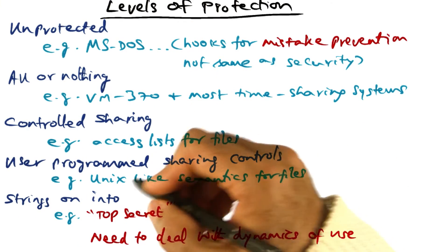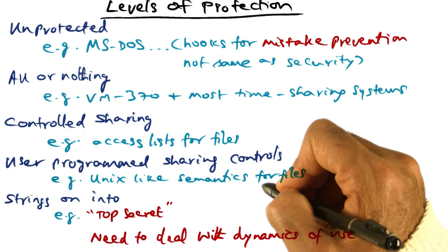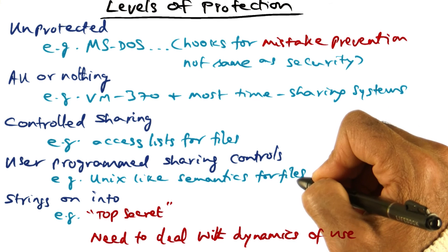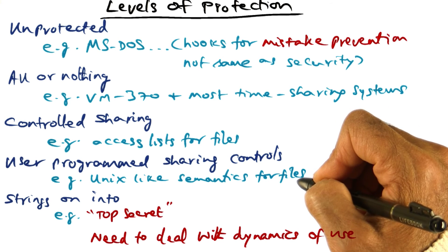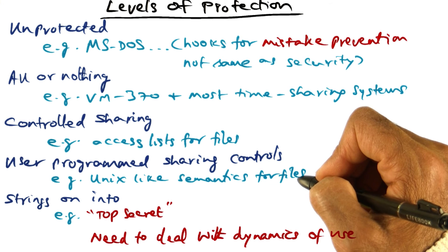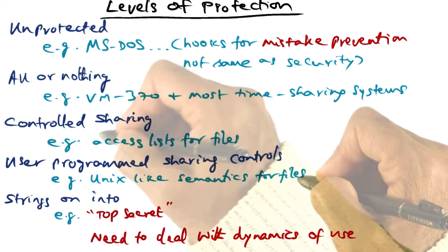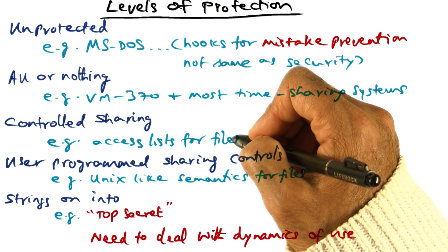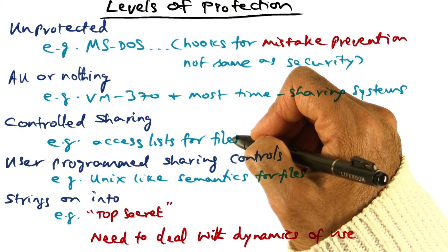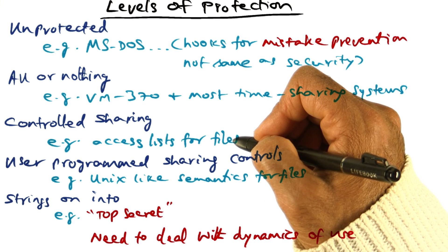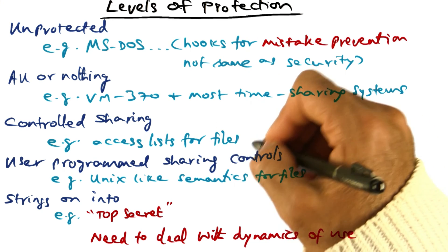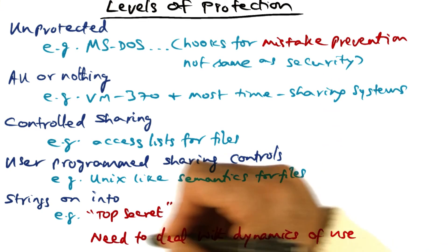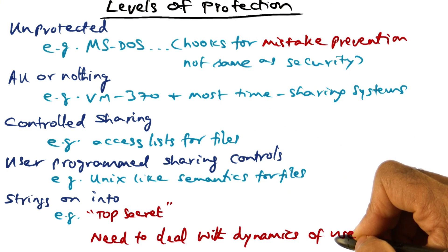For example, how do I change the permissions I've given to a particular file for a set of users I've defined as a group? How do I change the set of users included in the access list? What do I do to remove somebody from the access list, or add someone to the access list for information I've already created? All of these are issues that deal with the dynamics of use of information.